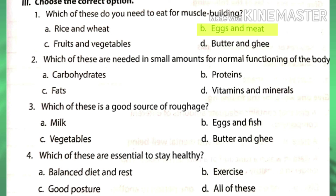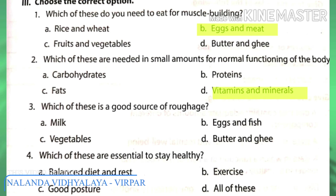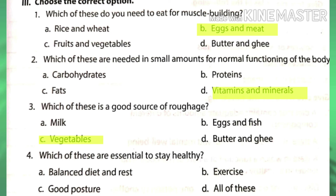Second MCQ: which of these are needed in small amounts for normal functioning of the body? The answer is vitamins and minerals. Third: which of these is a good source of roughage? The answer is vegetables, as raw vegetables are a very good source of roughage.